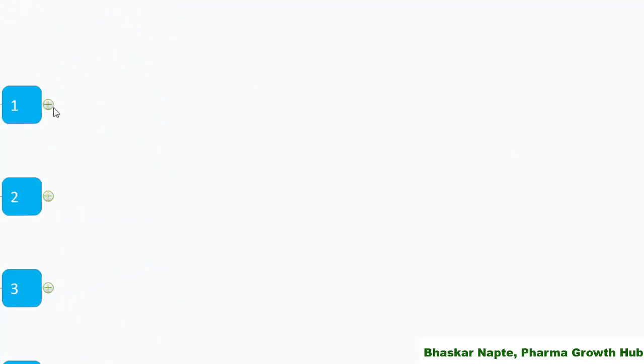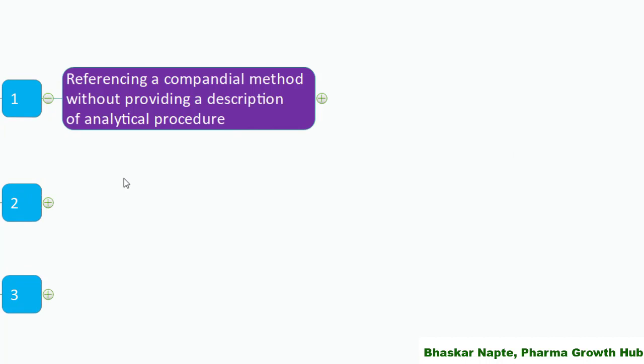Point number one: just referencing a compendial method without providing a description of the analytical procedure is not going to suffice. You cannot say for the assay of XYZ product, refer to USP monograph so-and-so. You need to also provide the details required so that the chemist or analyst is able to perform the analysis and does not need to refer to the USP monograph.